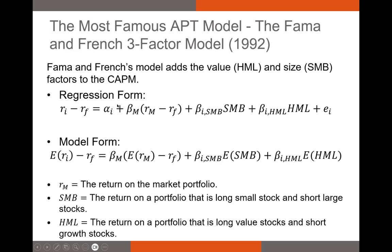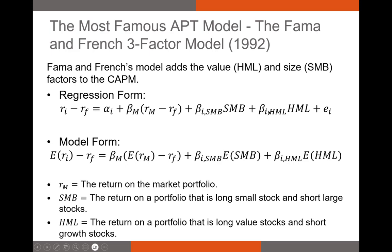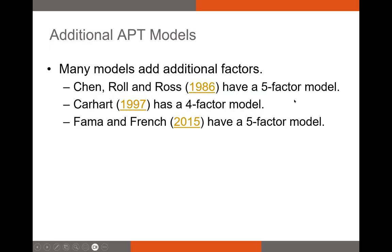The regression form of the Fama-French three-factor model states that the excess return on a given stock equals alpha plus beta-market times the market risk premium, plus beta-SMB times the SMB size factor, plus beta-HML times the HML value factor, plus an error term. This is essentially the CAPM with two additional factors appended. That's really all APT models are — they add additional factors to the CAPM to improve prediction ability.